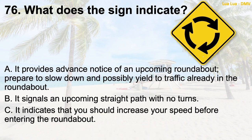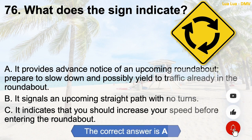Question 76: What does the sign indicate? A. It provides advance notice of an upcoming roundabout — prepare to slow down and possibly yield to traffic already in the roundabout. B. It signals an upcoming straight path with no turns. C. It indicates that you should increase your speed before entering the roundabout. The correct answer is A: It provides advance notice of an upcoming roundabout — prepare to slow down and possibly yield to traffic already in the roundabout.